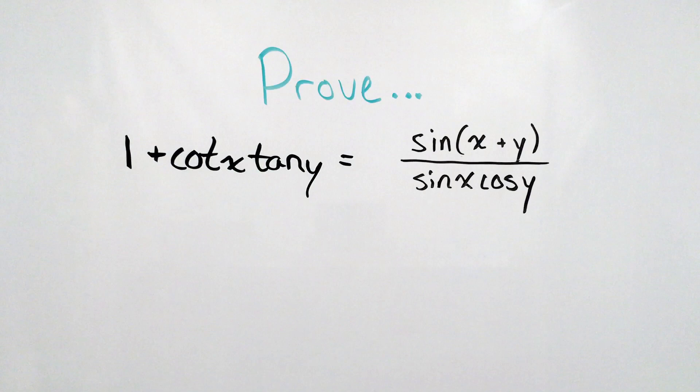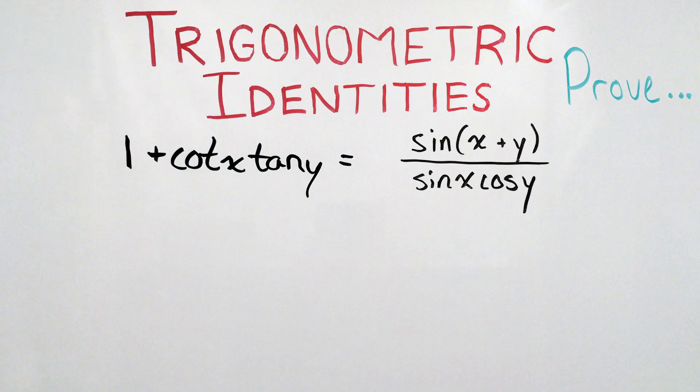In order to prove 1 plus cotangent of x times tan of y is equal to sin of x plus y over sin of x cos y, we're going to apply a few trig identities.